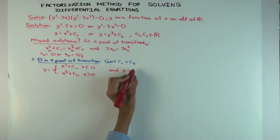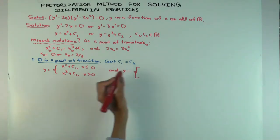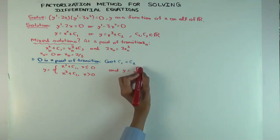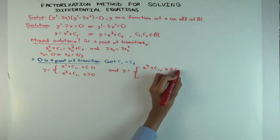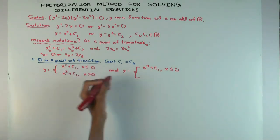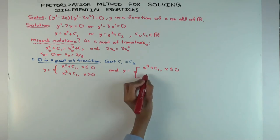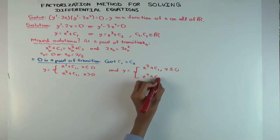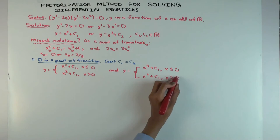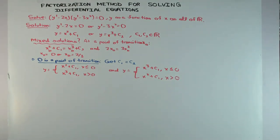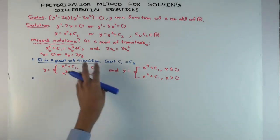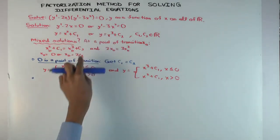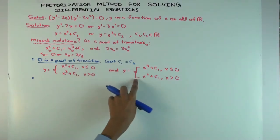You also get another family where the behavior is reversed: y = x³ + c₁ for x < 0 and y = x² + c₁ for x > 0. So these give you two new families of solutions, in addition to the two pure solution families we already had.